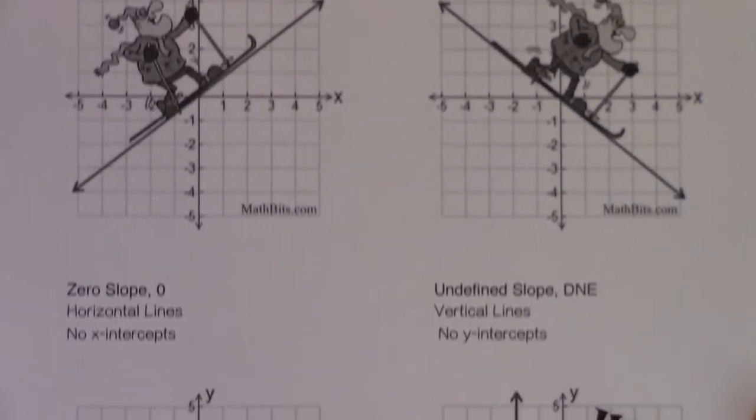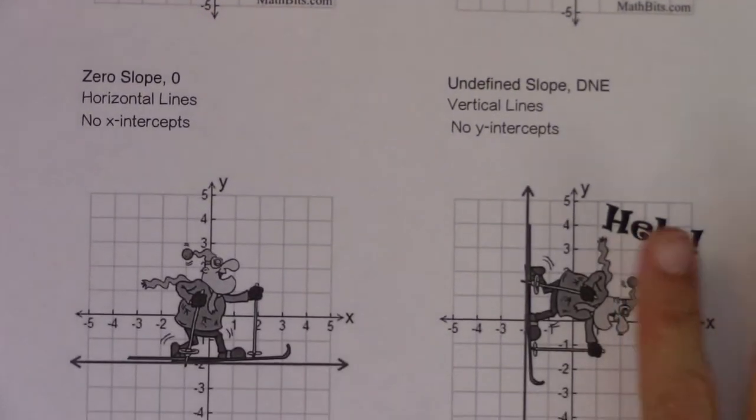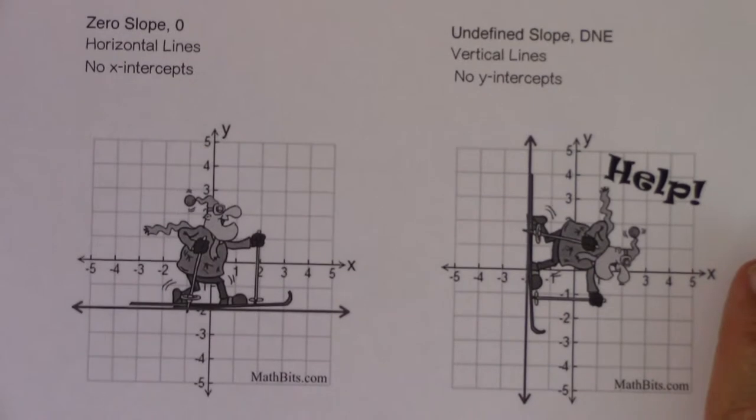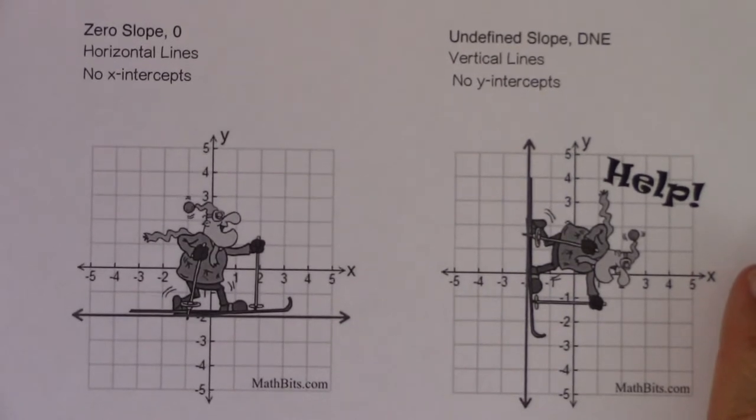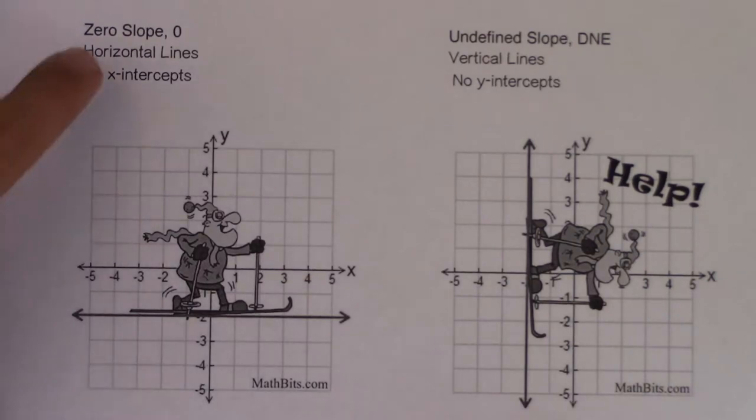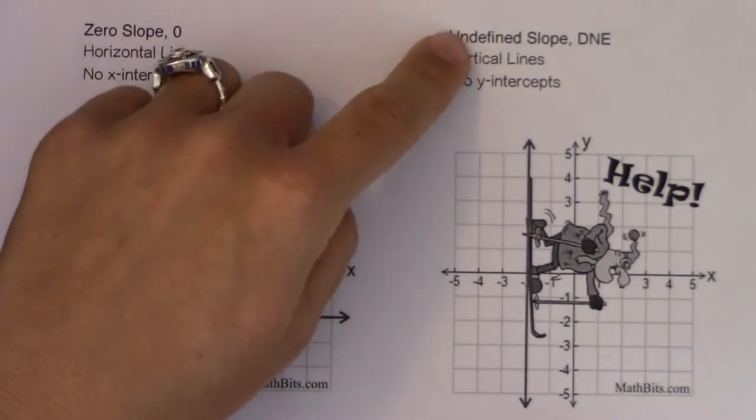So I do want to scooch this up and show you your other two options, just so we can see them. All right, so in terms of the other two options, you may have a horizontal line and you may have a vertical line.